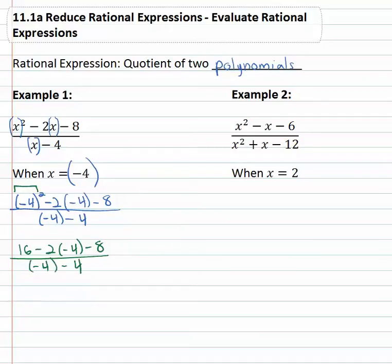Next in order of operations we multiply, do any multiplication from left to right. 16, negative 2 times negative 4 is going to be a positive 8 minus 8 all over the negative 4 minus 4.